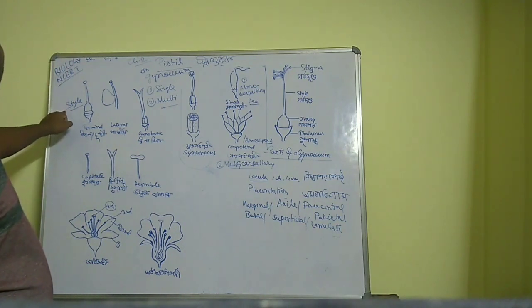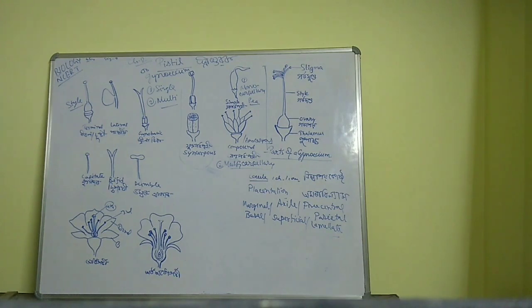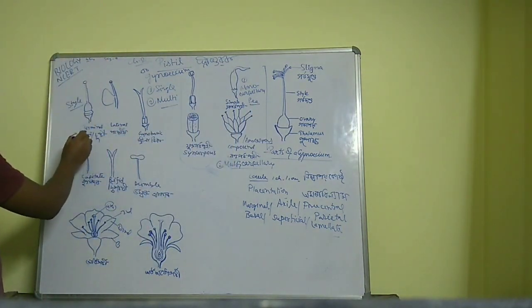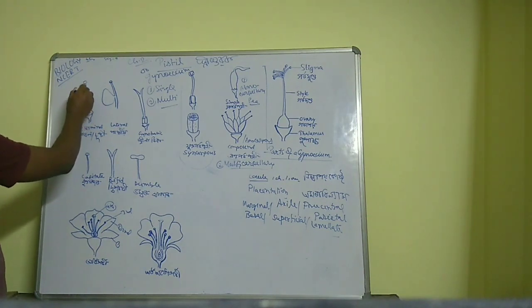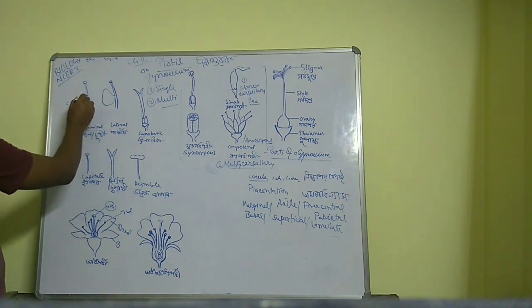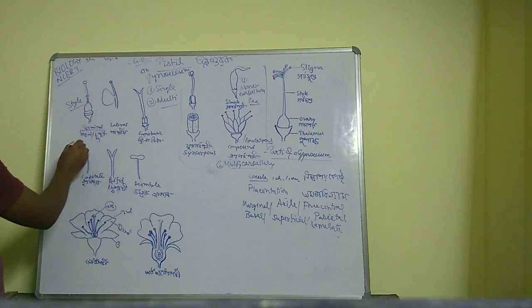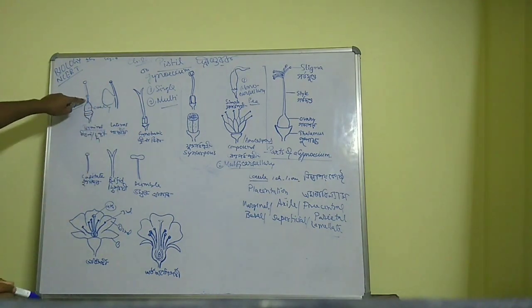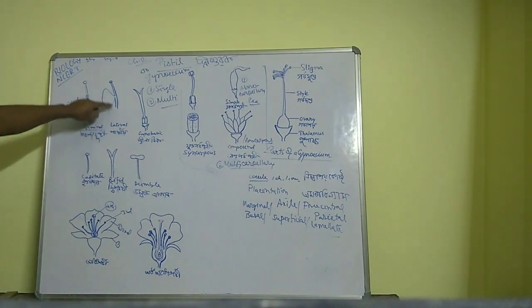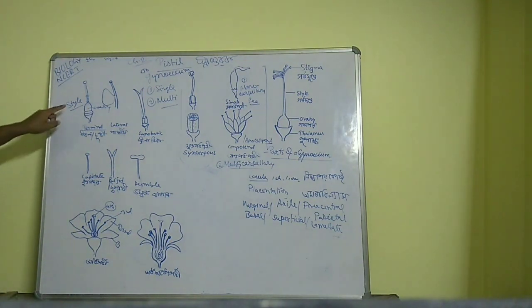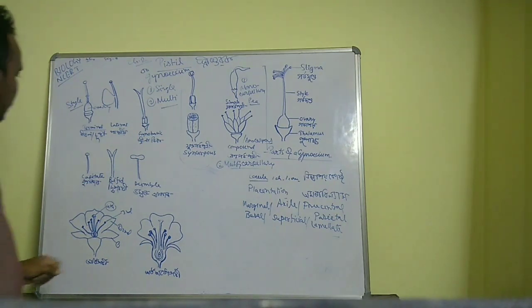In the case of the style, there are various types of styles. One type is the terminal style, found at the terminal end of the ovary. The style may be very short or very long. They may also be lateral, arising from the lateral end of the ovary. There are different types of styles found.